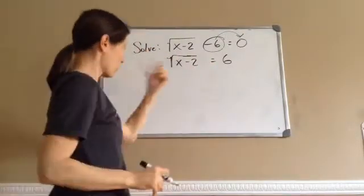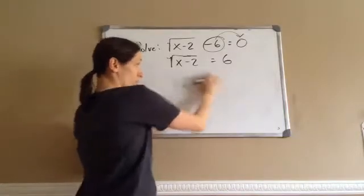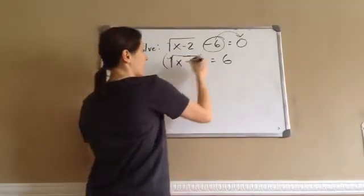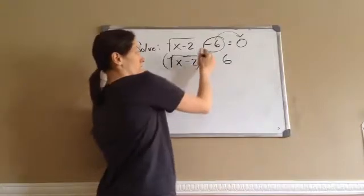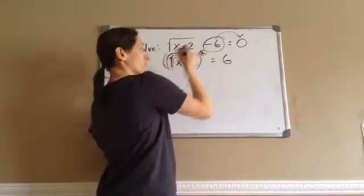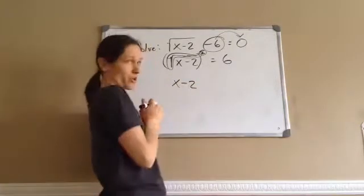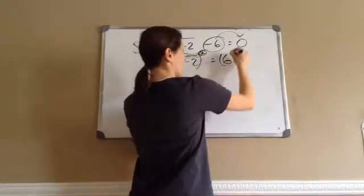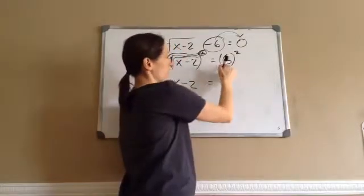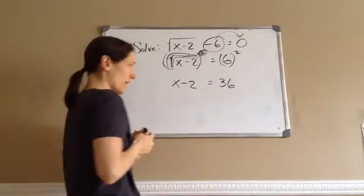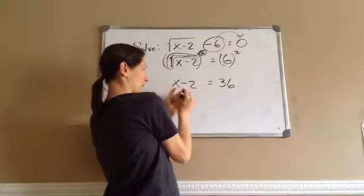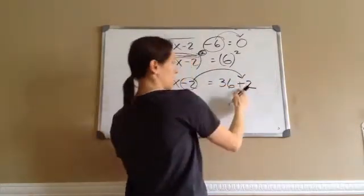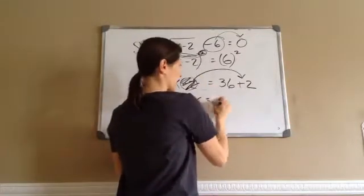Now I have square root of (x − 2) = 6. To remove the square root, I square both sides — squaring cancels the square root, leaving x − 2. What you do to one side you do to the other, so 6 squared is 36. Now solving for x: this minus 2 becomes plus 2 on the other side, so x equals 38.